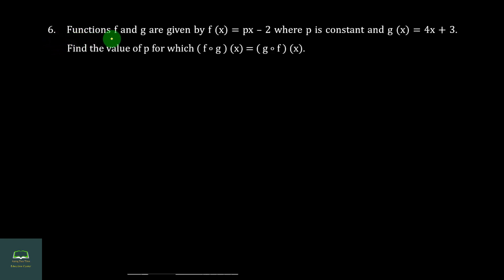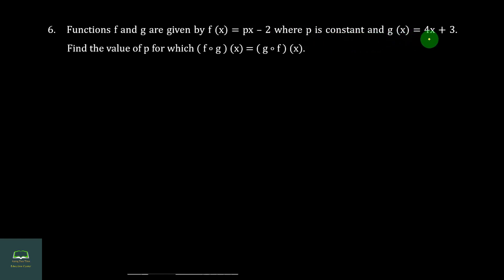Q6. Functions f and g are given by f(x) = bx minus 2, where b is a constant, and g(x) = 4x plus 3. Find the value of b for which f∘g(x) is equal to g∘f(x).